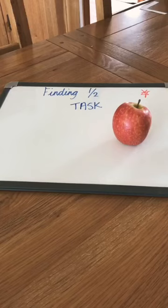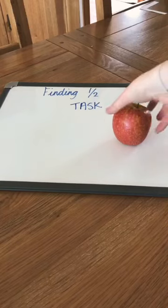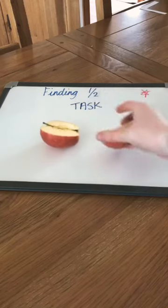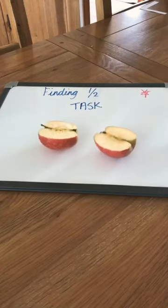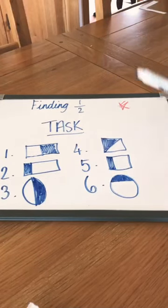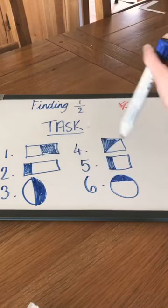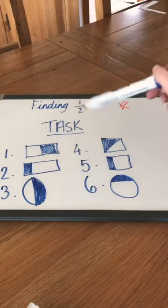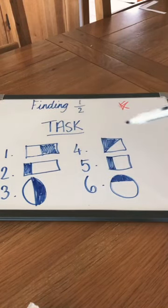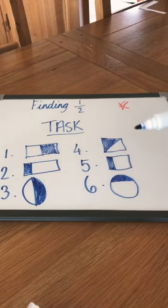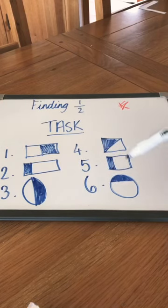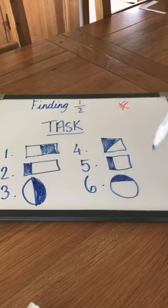For your one star challenge task, you have got six questions to have a go at. You need to tell me which ones are split in half — which ones have two equal parts — and make sure they remember they must have equal parts. There are some here that are not equal, so they will not be half. Pause the video now to have a go at the questions.